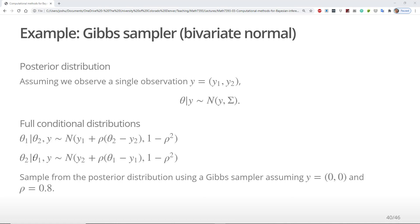The full conditional distribution of theta2 is very similar, with relevant aspects changed. We will implement a Gibbs sampler assuming the observed data y is equal to 0, 0 and rho is equal to 0.8.